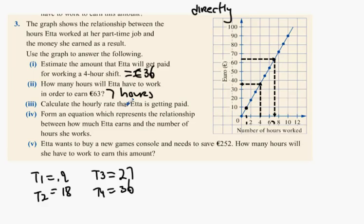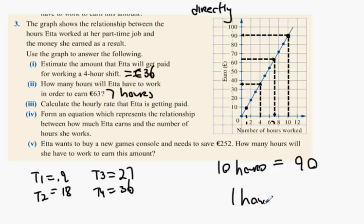Calculate the hourly rate that Etta is getting paid. Do you see ten hours gets us how much money? 90. We can see they're about on the line. So ten hours equals 90 euro, therefore what's one hour? Divide by ten and you get nine euro.